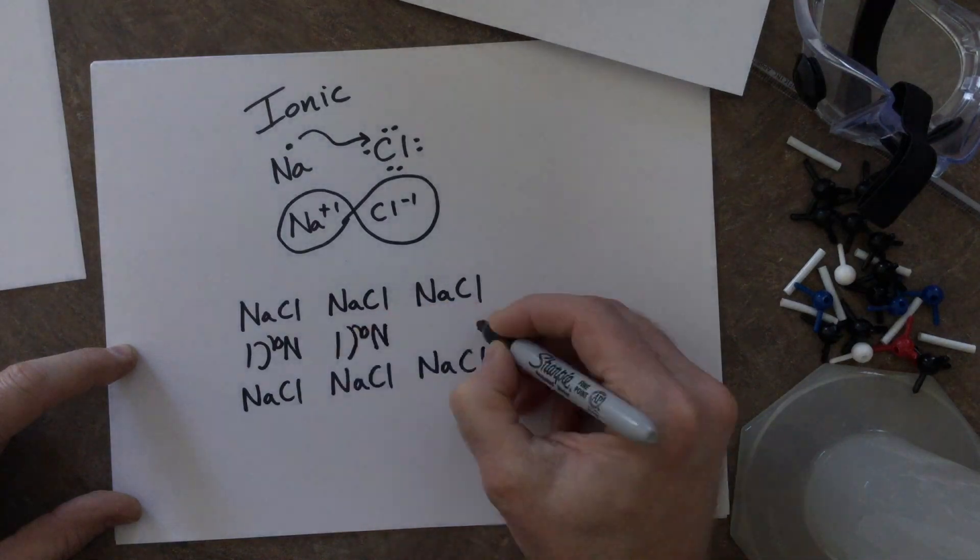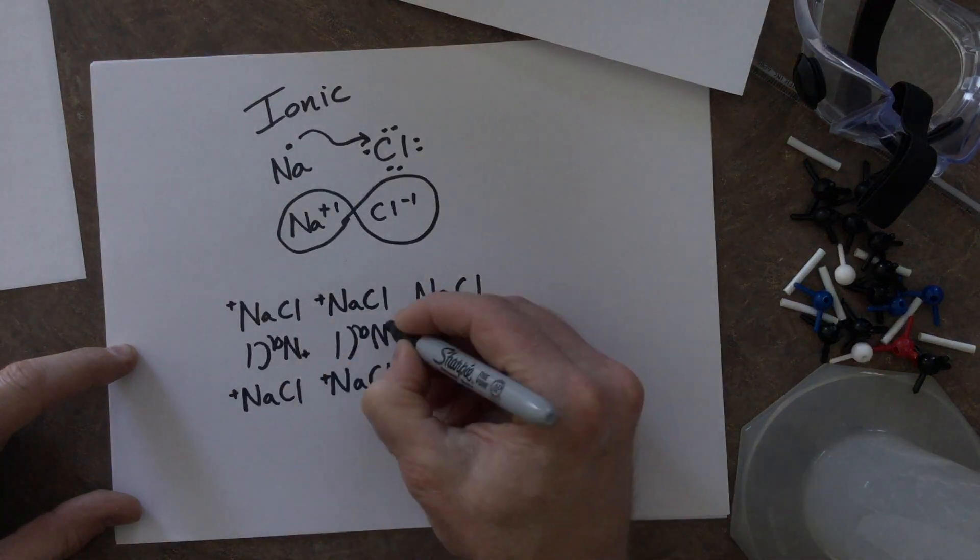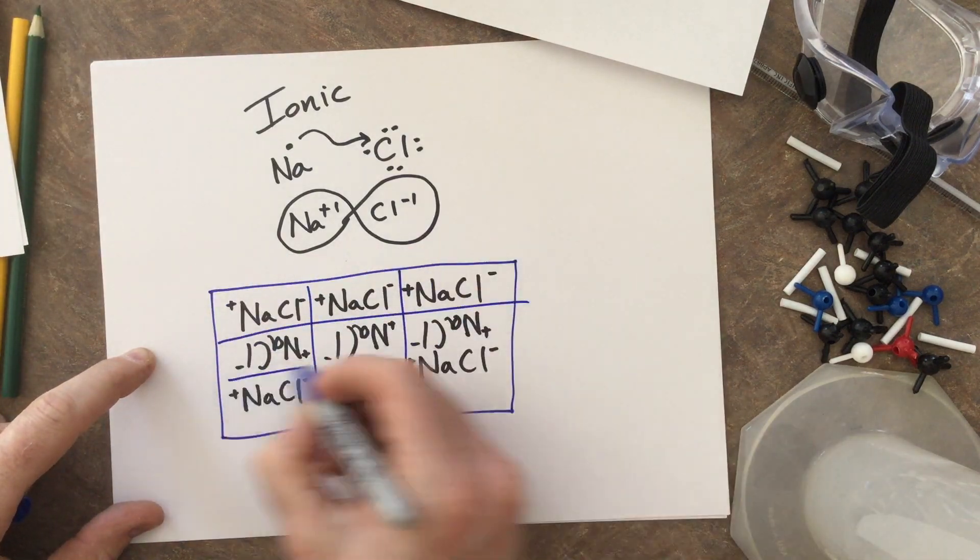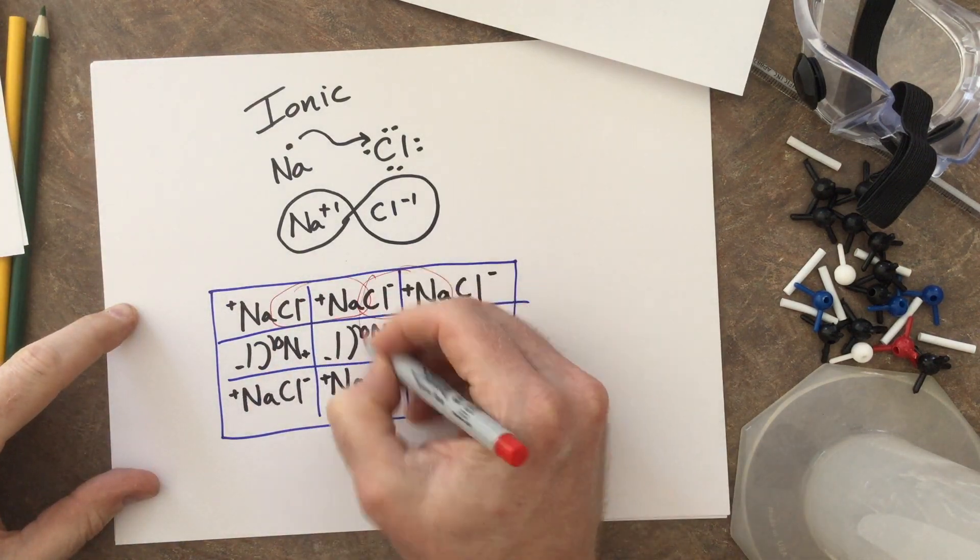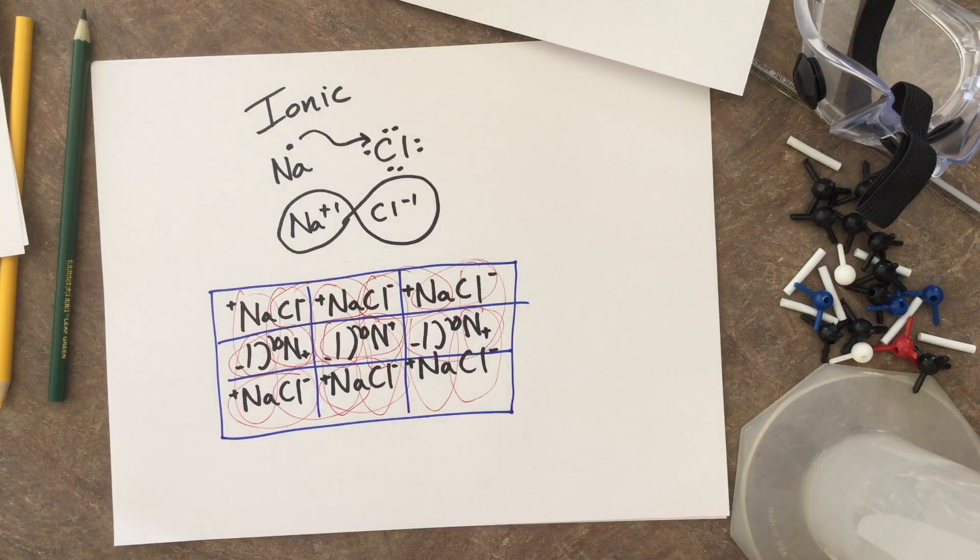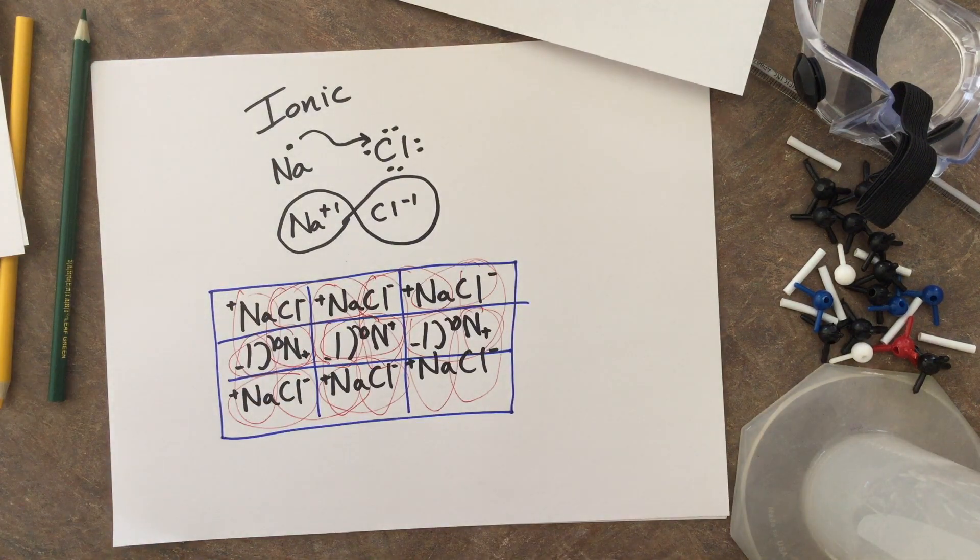And as each one has a permanent positive or negative charge, it starts to get kind of difficult to tell where one salt starts and another salt ends. It's like one big block of salt. They all hang out together really tight, which is why it is a solid.